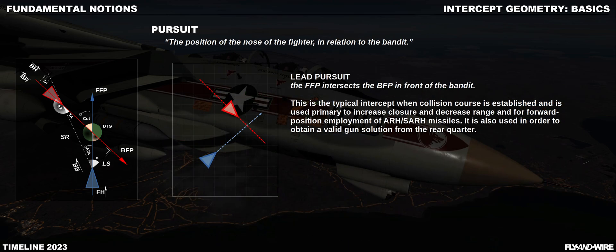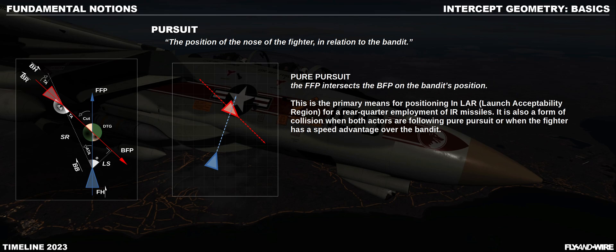There are three types of pursuit. Let's start from the first one, lead pursuit. In this case, the nose of the fighter is pointing in front of the target. It is used on several occasions, such as when we are on collision course, or we need some lead to engage a target with guns from the rear quarter.